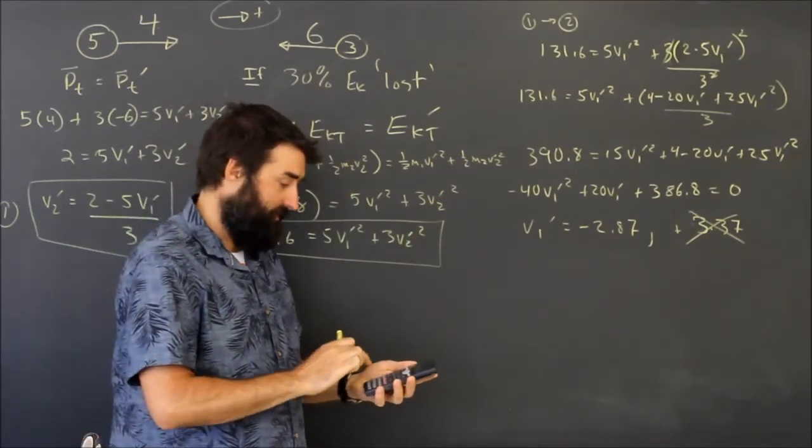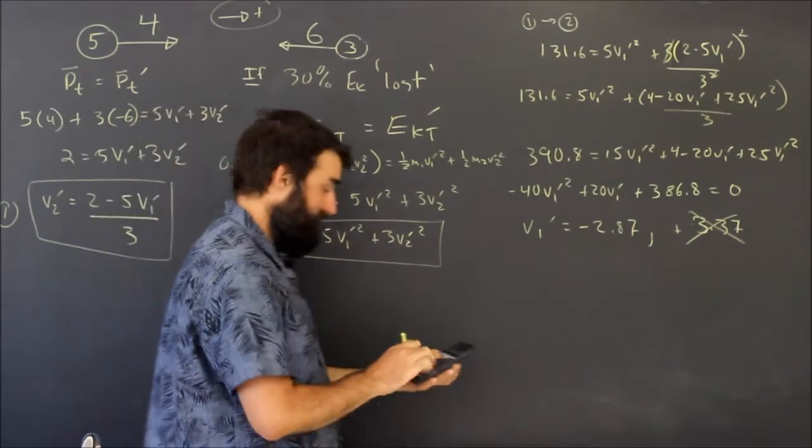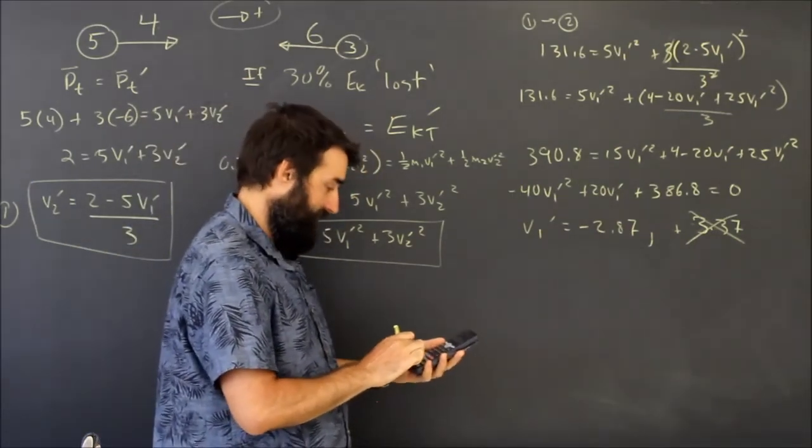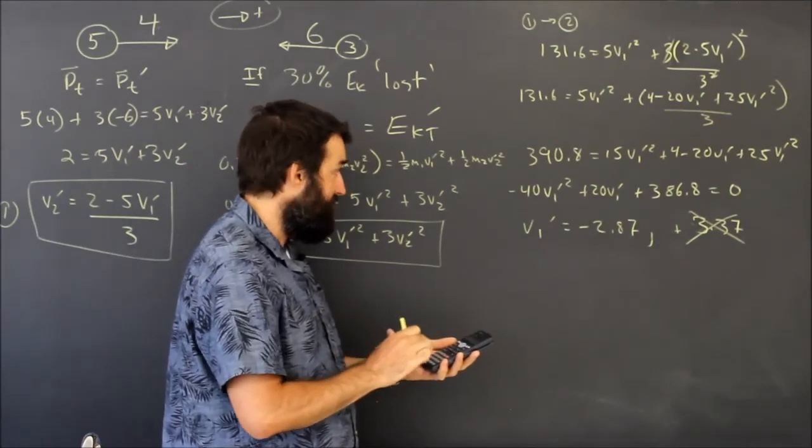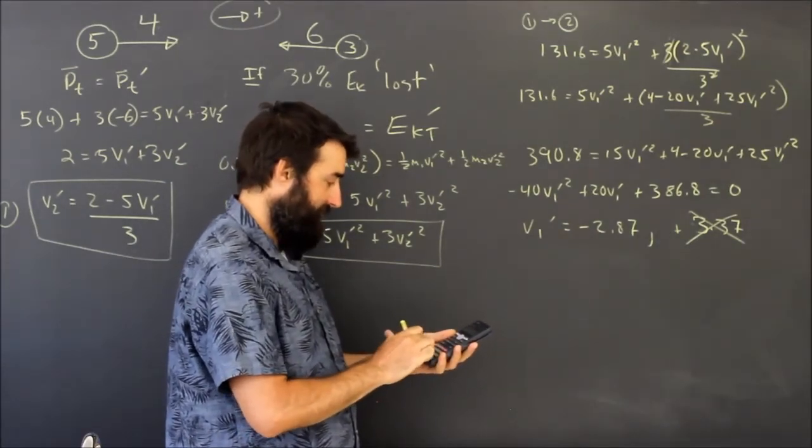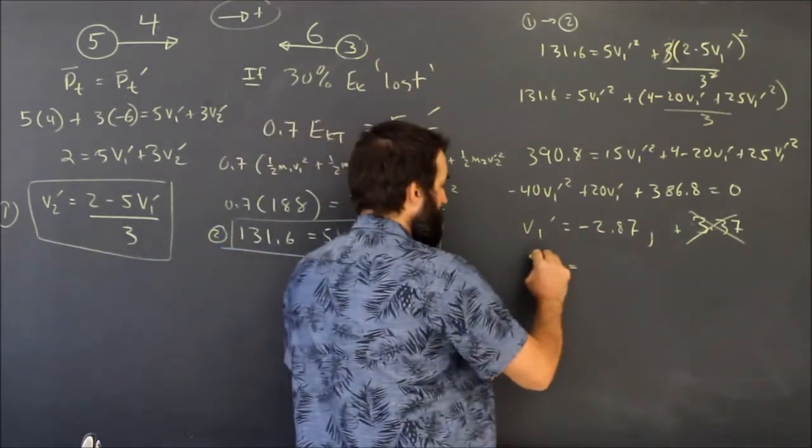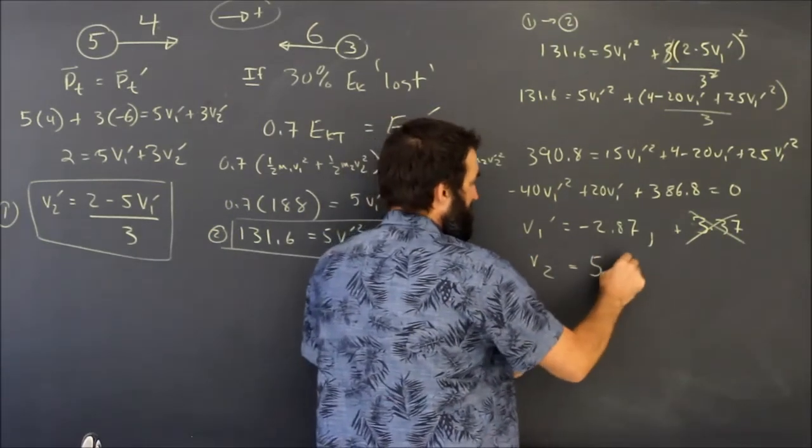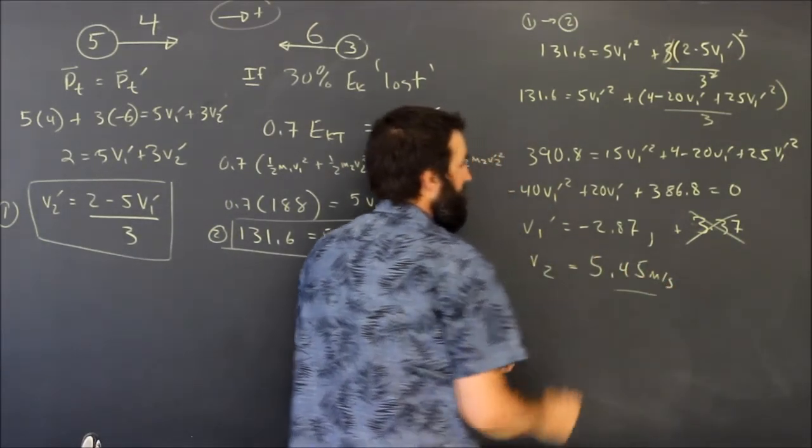Okay, so no problem. We end up with v1 is negative 2.87, and then we want to take that and we want to drop it into equation number two. 2 minus open bracket, 5 times negative 2.87, close bracket, divided by 3 gives us 5.45. So 5.45 meters per second.